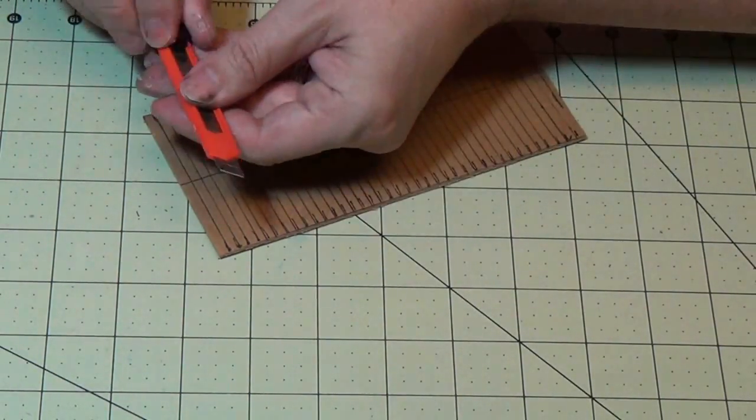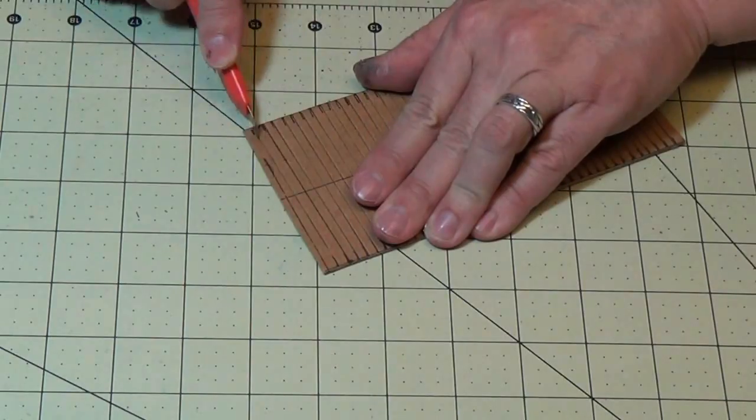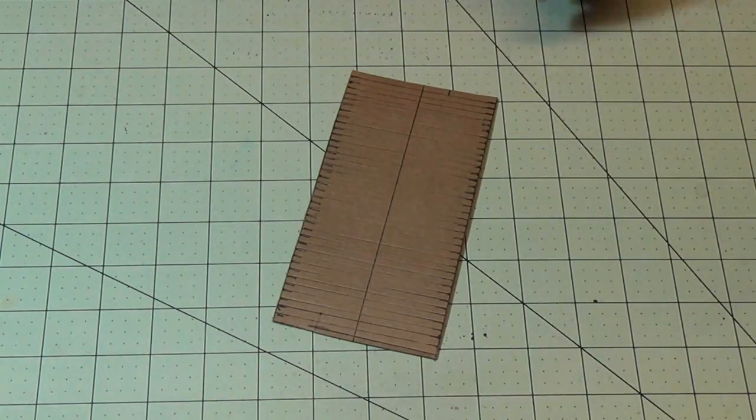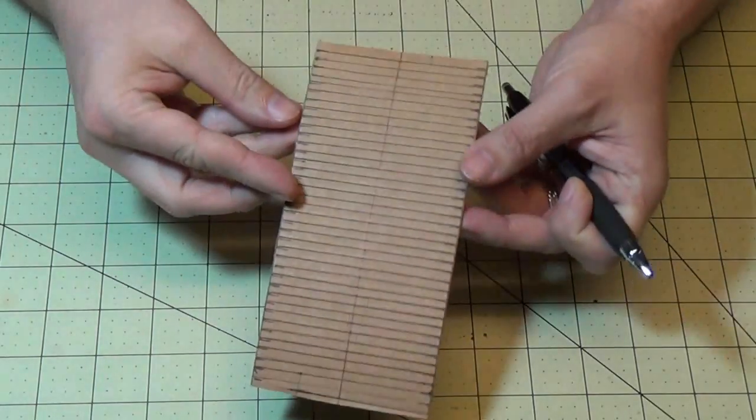So I'm just using a small box cutter. I'm just cutting the first layer. I didn't cut through all the way. I just cut that first layer. And you can see it flexed there.